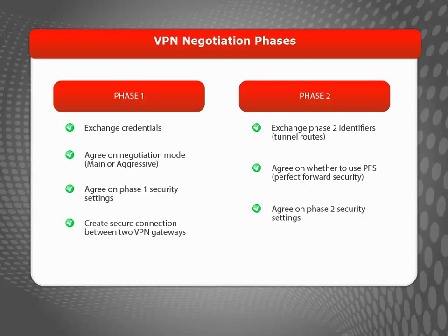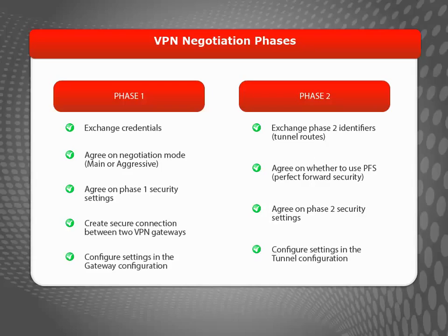Successful completion of Phase 2 negotiations results in a VPN tunnel that can be used to securely route traffic between the two networks. If any of the Phase 1 or Phase 2 settings do not match, VPN negotiations fail. For a Firebox, you configure Phase 1 settings in the Gateway configuration, and you configure Phase 2 settings in the Tunnel configuration.